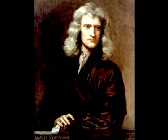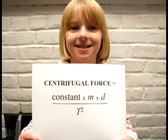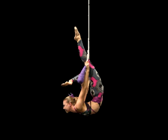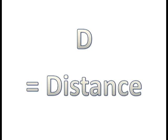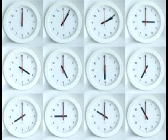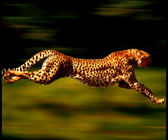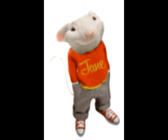Newton figured out the formula for centrifugal force. It looks like this. If we continue with Newton's suspicious person on a rope example, then M, mass, stands for the size of the person being swung; D, distance, stands for the length of the rope; and T, time, stands for how long it takes to do one revolution. So if you have a large person or object swinging around by a long rope very quickly, you'll have a much greater centrifugal force than a small person on a short rope swinging around slowly.